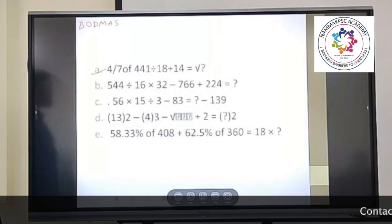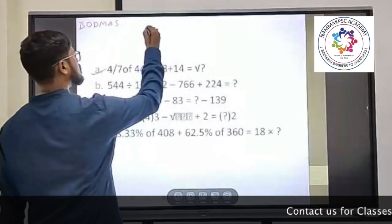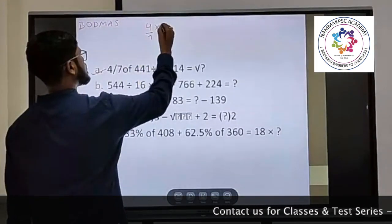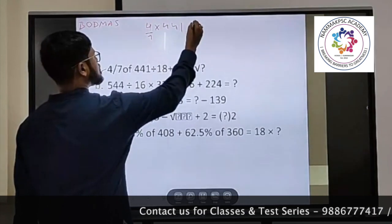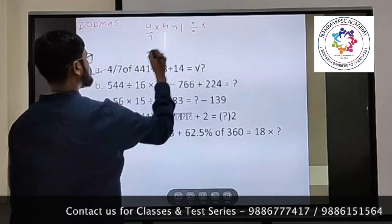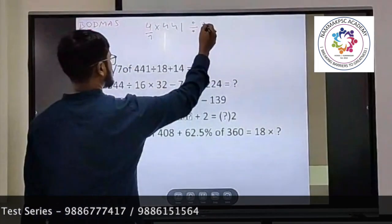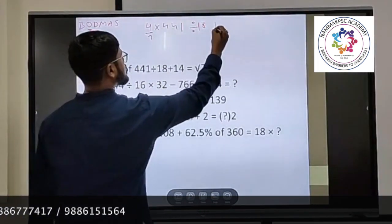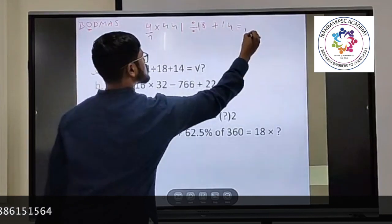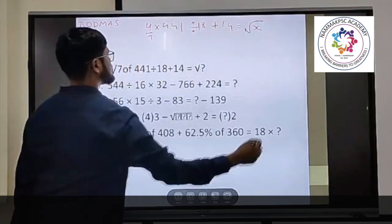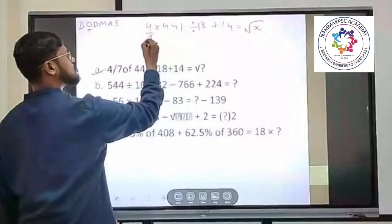In the first equation, write down 4 by 7 into 441 divided by 18, of means order, second order. So first we'll apply this part into, that is divided by 18 plus 14 is equal to square of x. 7 how many times 441? 63. So 4 into 63 divided by 18 plus 14.